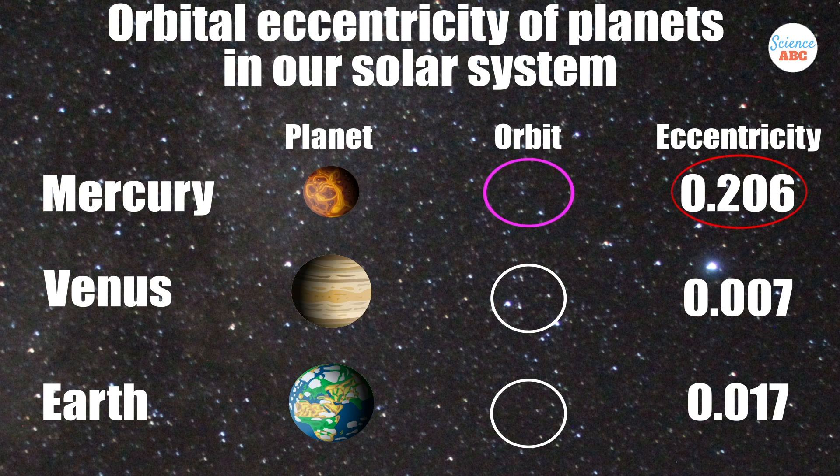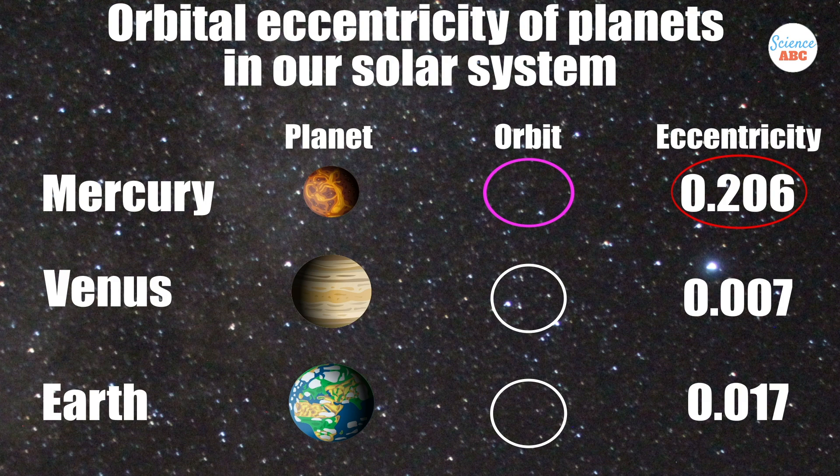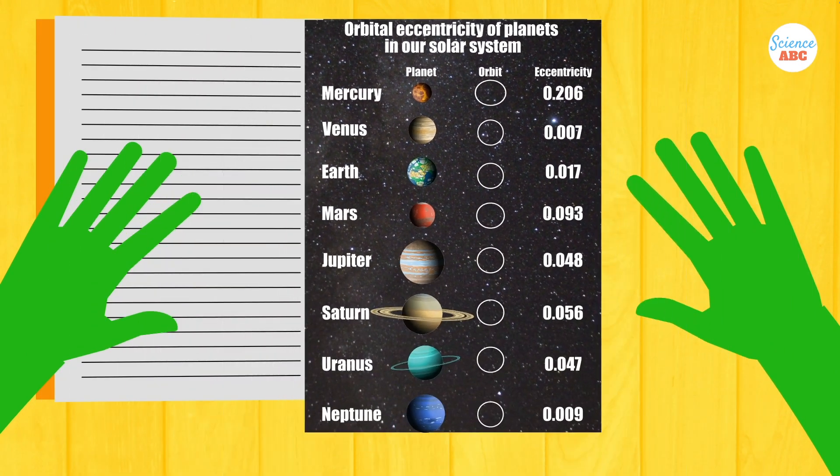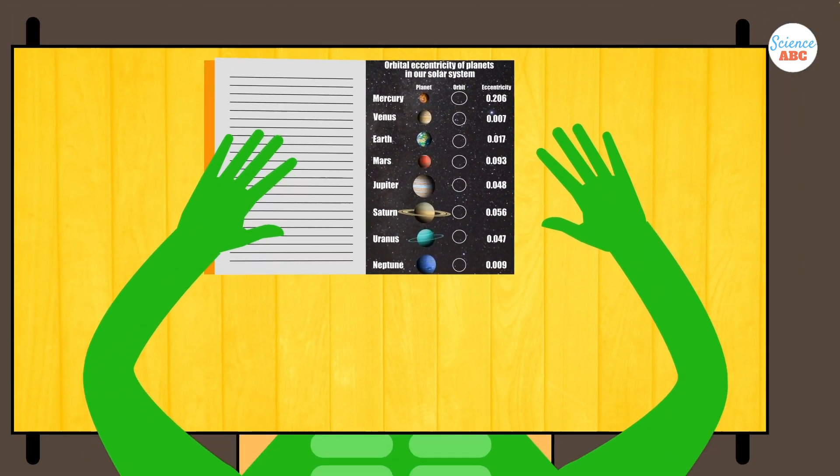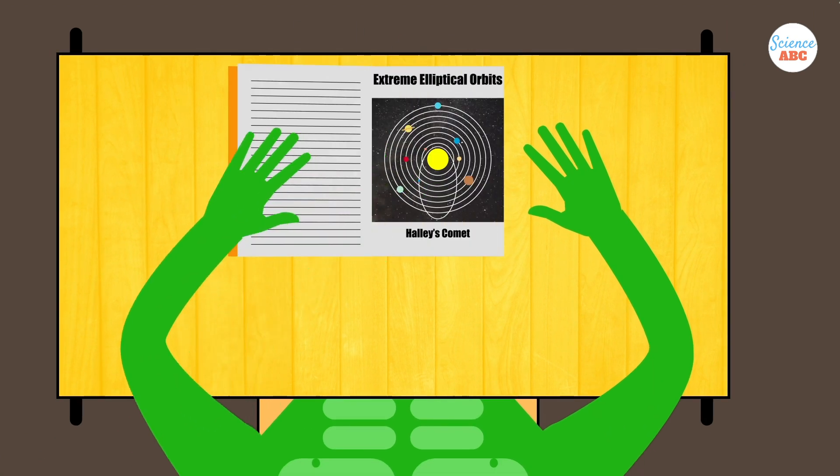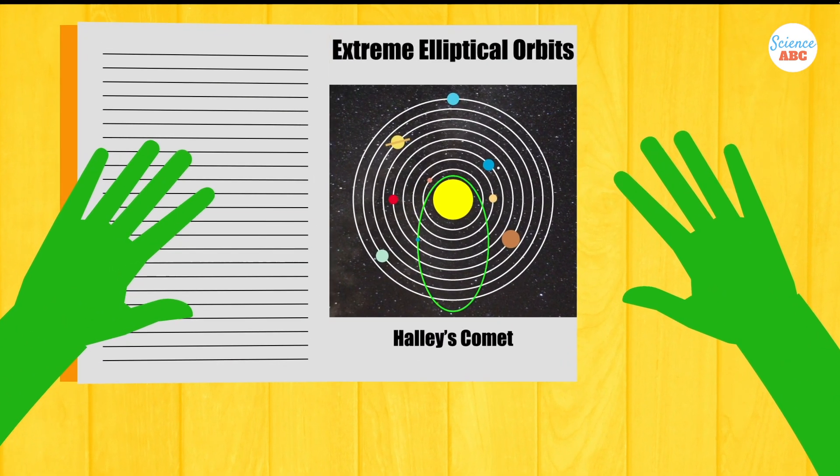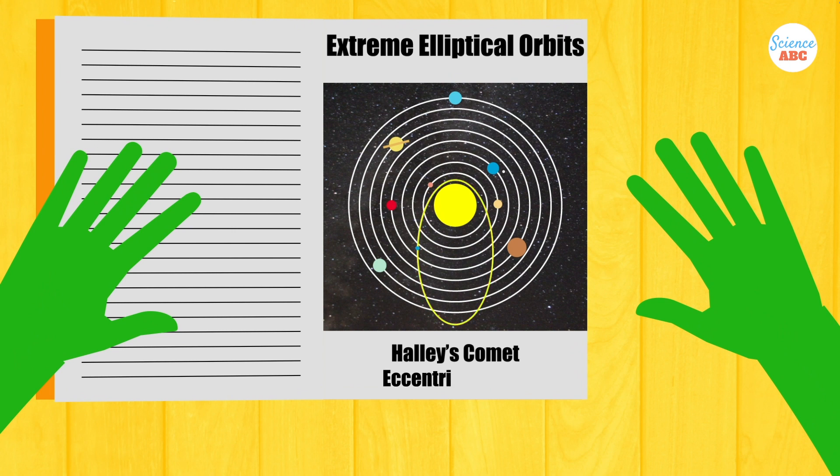To those wondering what an extreme ellipse could be, there's a great example to look at. Halley's Comet. Halley's Comet follows a path with an eccentricity of approximately 0.97. Just look at how elongated its elliptical path is.